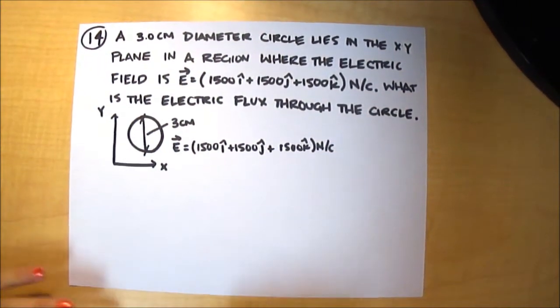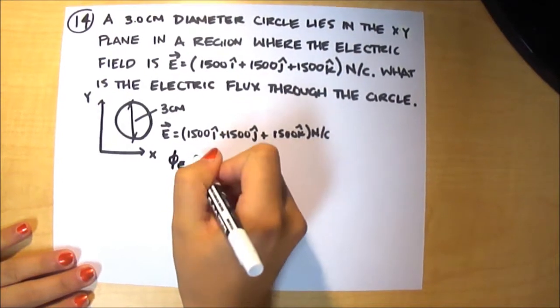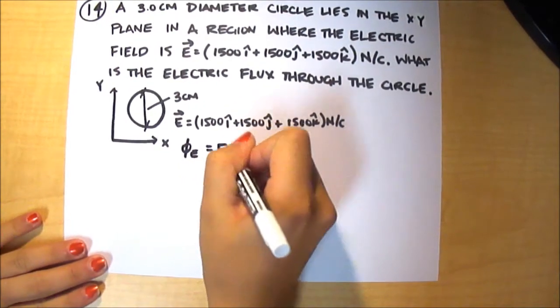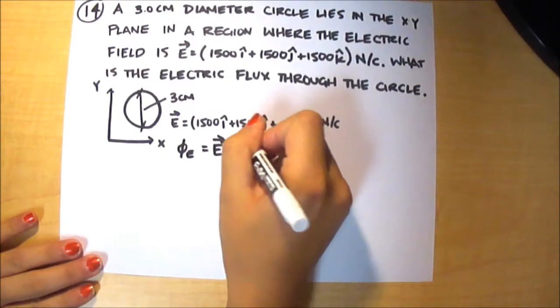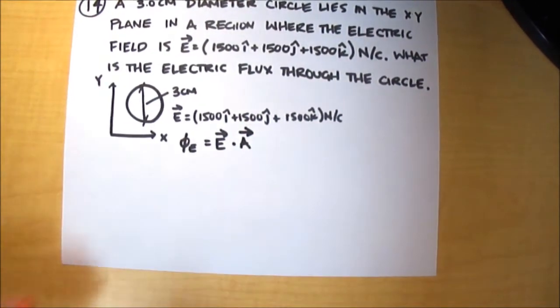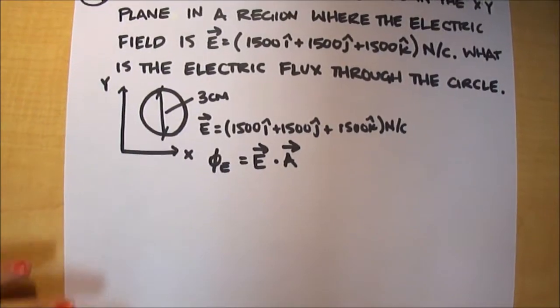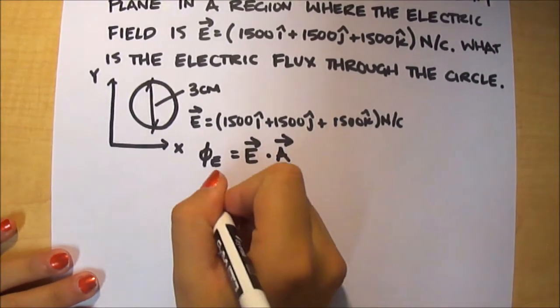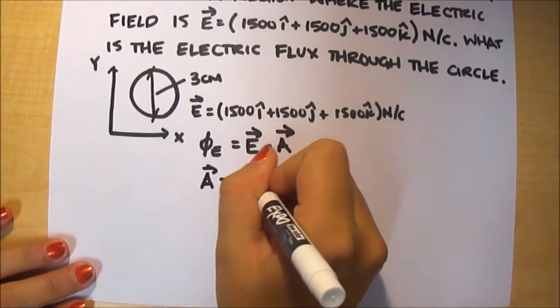To solve this, we'll use the equation electric flux equals electric field dot product area vector. First we'll solve for our A vector, which we'll find using the equation A equals pi r squared.